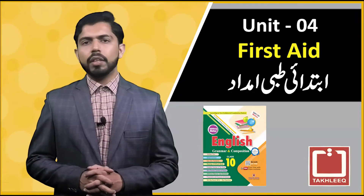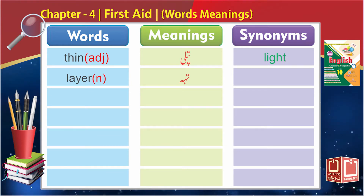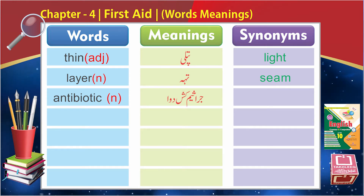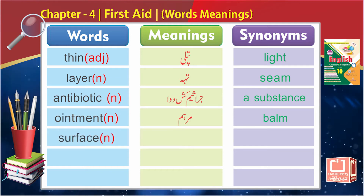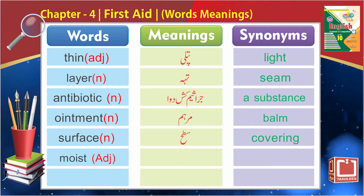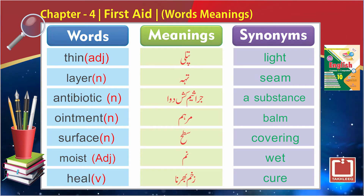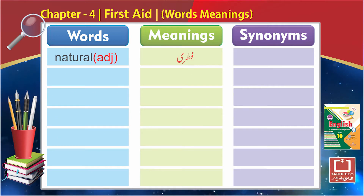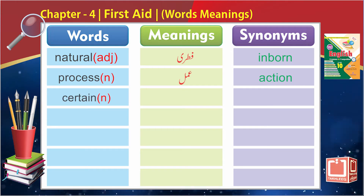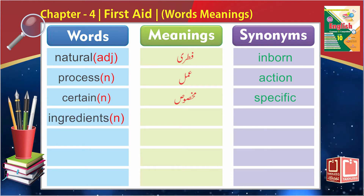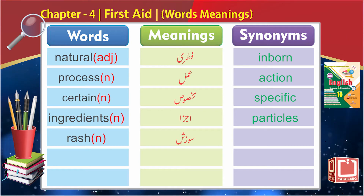Paragraph ki reading ke baad difficult words meaning pardte hain: 'thin' mean patli, light/halki si, mamooli si. 'Layer' mean tah. 'Antibiotic' means jarasim kash dawa — a substance. 'Ointment' means marham/balm. 'Surface' means covering. 'Moist' means gila karna. 'Heal/zaham thik hona' means cure. 'Natural' means fitri/inborn. 'Process' means amal/action/procedure. 'Certain' means specific. 'Ingredients' means ajza/particles. 'Rash' means sozish/eruption.